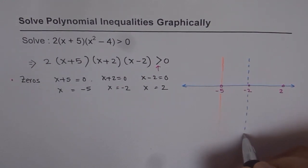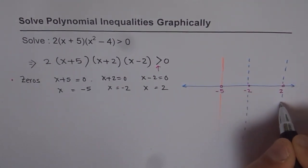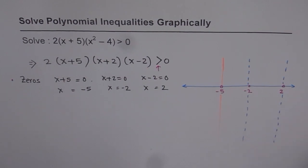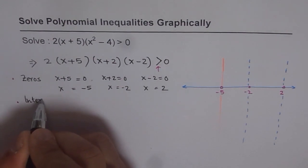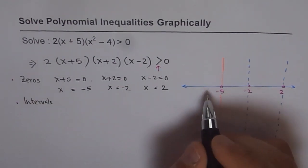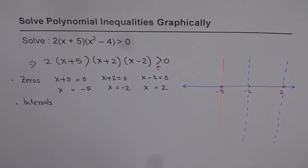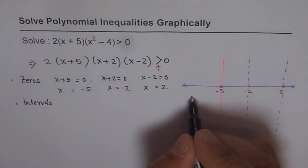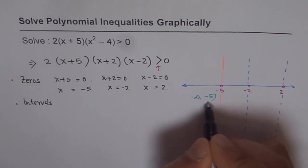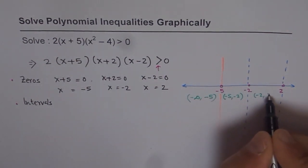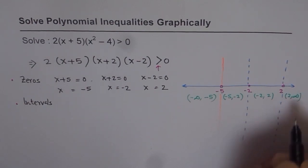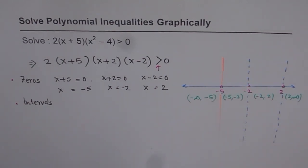So at this stage, what we will do is we will list the intervals in which zeros divide. So we will write down the intervals now. So intervals for us are from minus infinity to minus 5, correct? So that is one interval. The second one is from minus 5 to minus 2. And then we have from minus 2 to 2. And the last one is from 2 to infinity. So these are the 4 intervals for us.